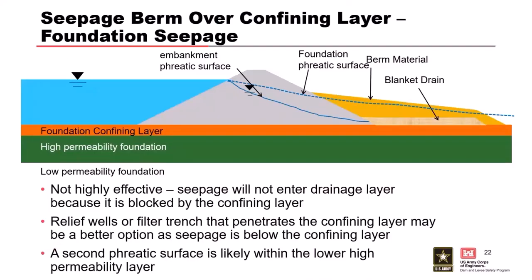In this scenario, there's a confining layer running under the embankment with no cutoff into the low-permeability zone, and somewhere upstream the reservoir has access to a high-permeability foundation. You've got two phreatic surfaces — the embankment one may be okay, but the foundation will be pretty high. Just putting a long berm on may not help the foundation because you're just pushing things out farther through the high-permeable zone. This may be a place where relief wells or some other system that penetrates the confining layer would be a better option.